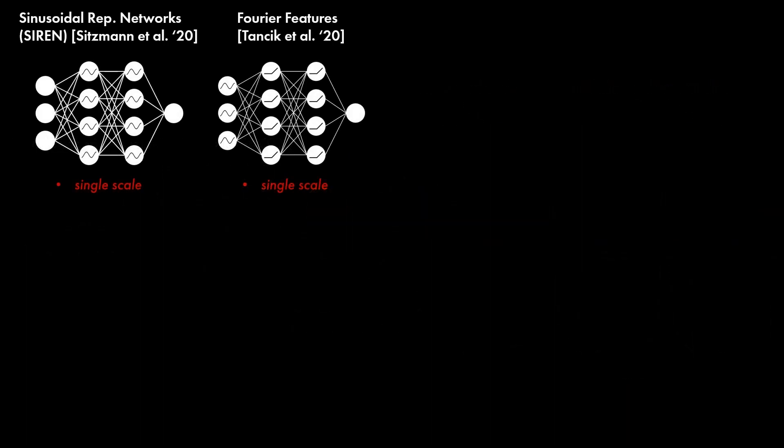Closest to our work are other coordinate-based networks such as SIREN and networks using Fourier features positional encodings. These networks are designed to represent signals at a single scale.